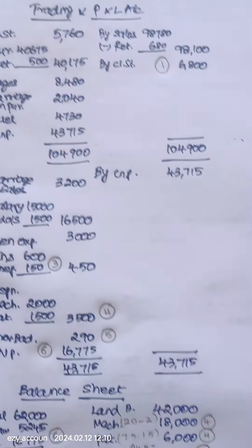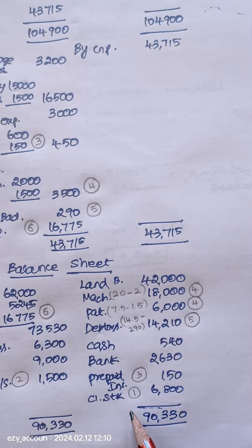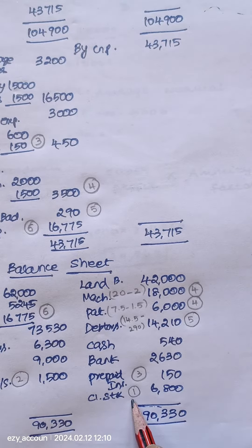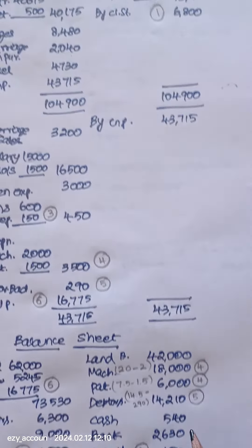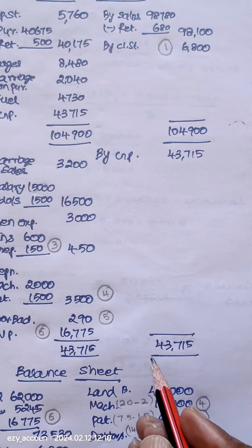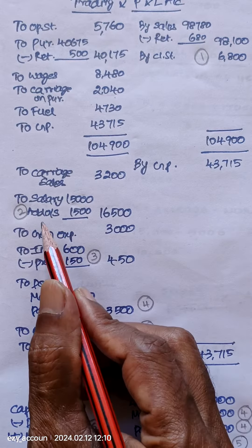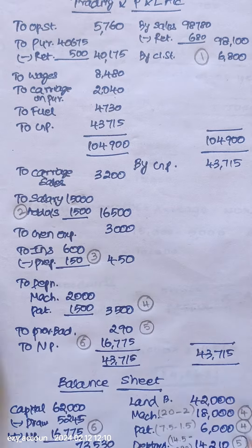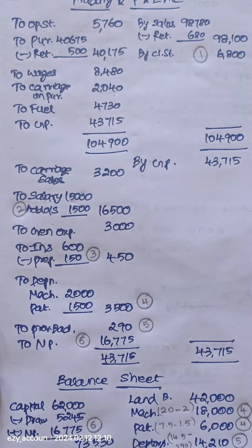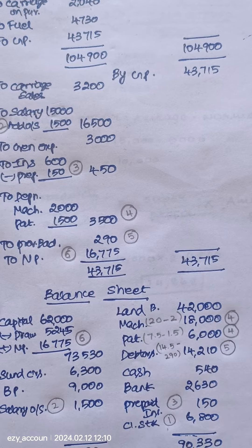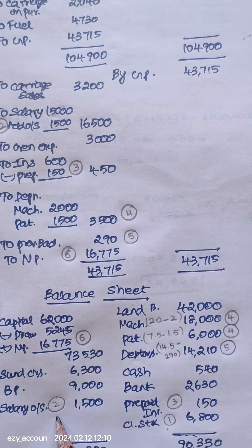Closing stock goes in the balance sheet — it's a one mark entry. The second adjustment is salary outstanding: add it to salary in the P&L and show it as a liability in the balance sheet.